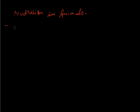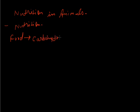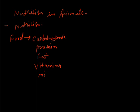Today we discuss nutrition in developed animals. First, what is the definition of nutrition? We eat food — and food is a combination of seven different nutrients: carbohydrate, protein, fat, vitamins, minerals, roughage, and water.